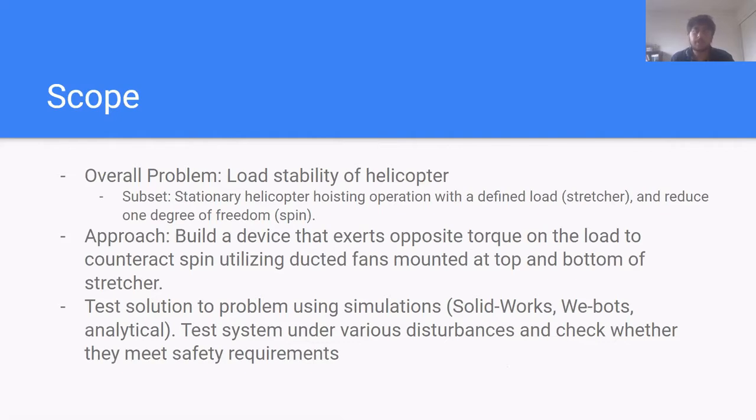The scope of the project is to solve the overall problem with the load stability of the helicopter. This specific subset of the problem involves we have a stationary helicopter hoisting operation with a defined load being a stretcher and we seek to reduce one degree of freedom, which is spin. Our approach is to build a device that exerts opposite torque on the load to counteract spin, utilizing ducted fans mounted at the top and bottom of the stretcher. We will test solutions to this problem using simulations such as SOLIDWORKS, WEBOTs, and analytical simulations. We will test systems under various disturbances and check whether they meet the safety requirements.